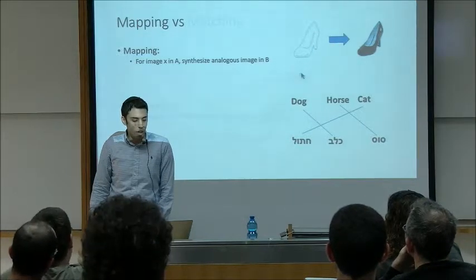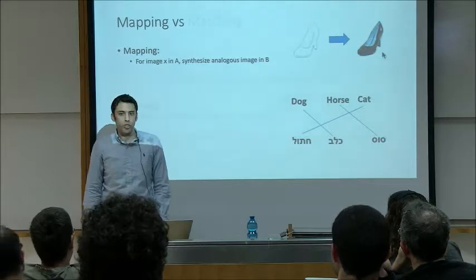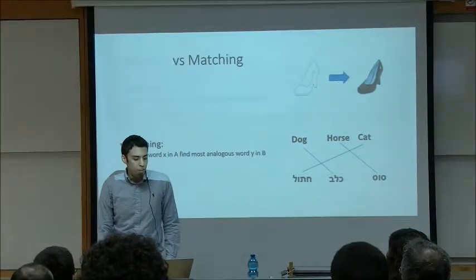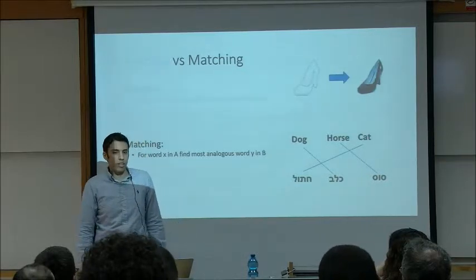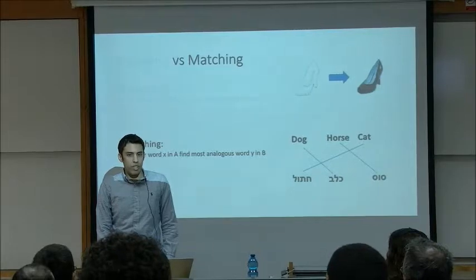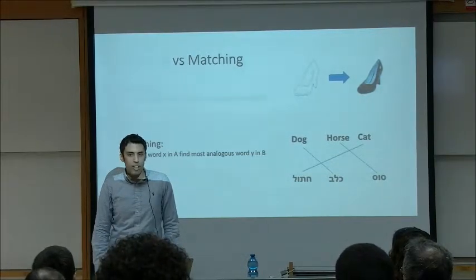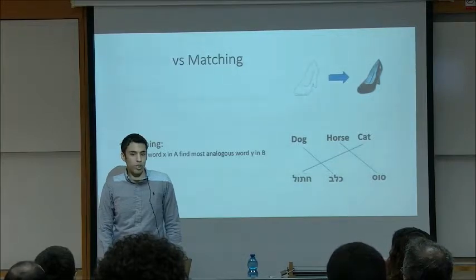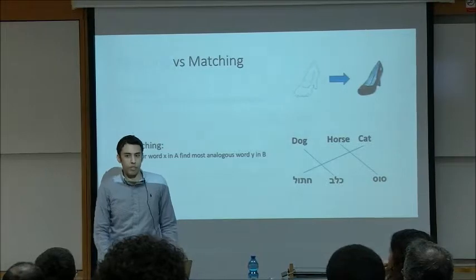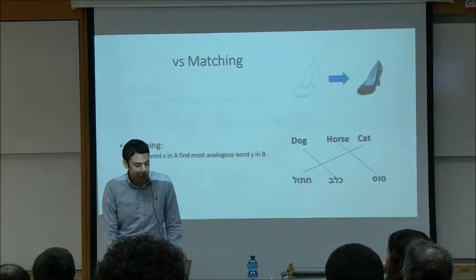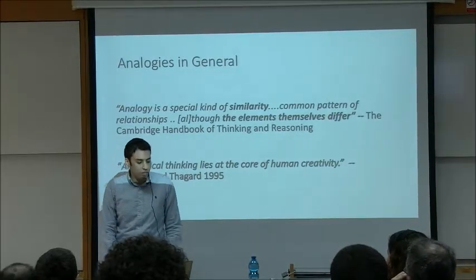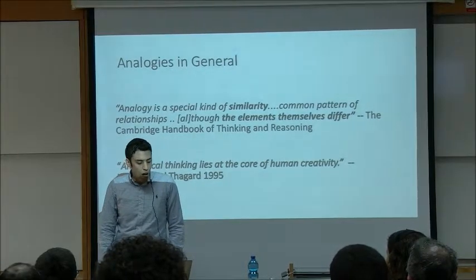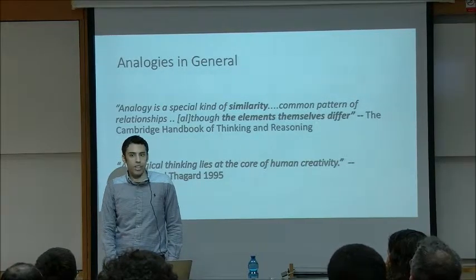For example, we want to synthesize a photorealistic image of a shoe that preserves the same edge map. The other task is matching: for every word X in one domain, we want to retrieve the most analogous word in the other domain. If we had supervision, both tasks wouldn't be very difficult — one would be supervised regression, the other supervised metric learning. Without supervision, these tasks become very challenging. Analogies are defined as a special kind of similarity about finding common patterns of relationships, even though the elements themselves might differ. Hollyoak and Thagard say that analogical thinking lies at the core of human creativity.